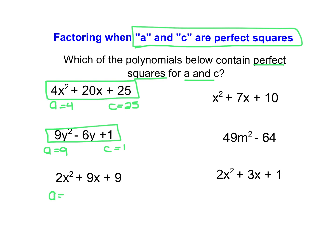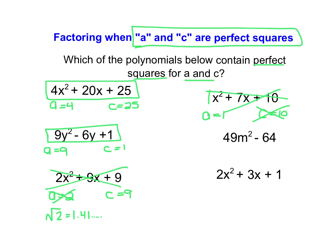This next one has A equal to 2 and C equal to 9. Well, 9 is a perfect square and can be square rooted easily, but the square root of 2 is a decimal — about 1.41 and then it keeps going. Because of that, A is not a perfect square and as a result, this strategy will not work for that particular expression. Over here, we have an A value equal to 1, which is a perfect square, and a C value equal to 10. But trying to square root 10 produces a decimal, so because this is not going to produce an integer when square rooted, this expression cannot use the strategy we're about to discuss.